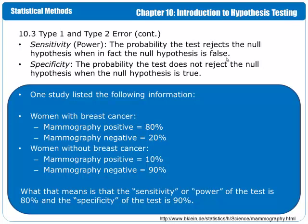Specificity is the probability the test does not reject the null hypothesis when the null hypothesis is true, meaning correct negatives instead of false negatives. It also means the ability of the test to not say there's a problem when there isn't a problem. So looking at the results of the mammography study, the sensitivity or the power of the test is 80% because 80% of the time it correctly identified the breast cancer. The specificity of the exam is 90% because for women without breast cancer, 90% of the mammography results correctly came back negative.